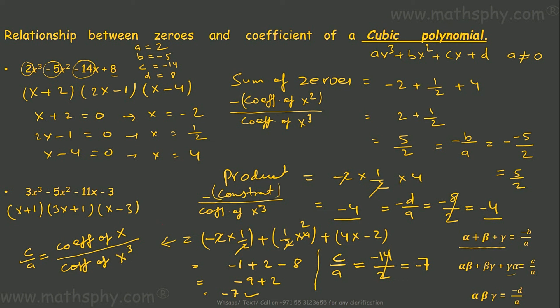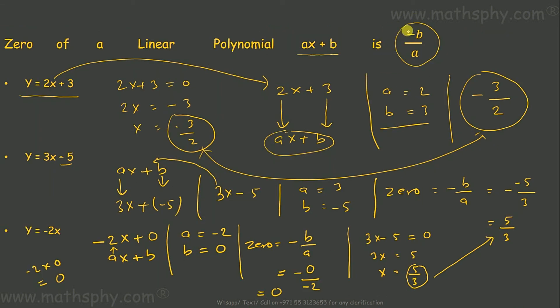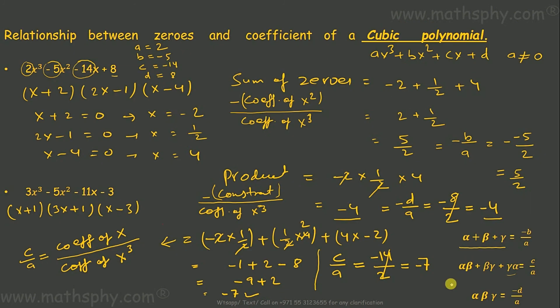So this was about the relationship between zeros and coefficients of cubic polynomials. We will use these relationships for cubic, quadratic, and linear polynomials in solving questions in this chapter.